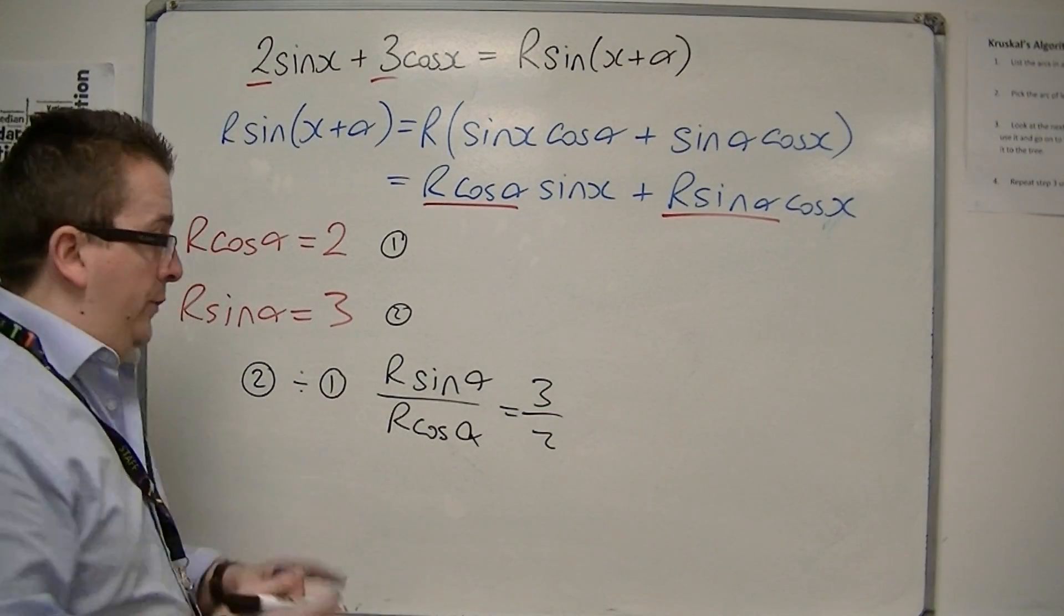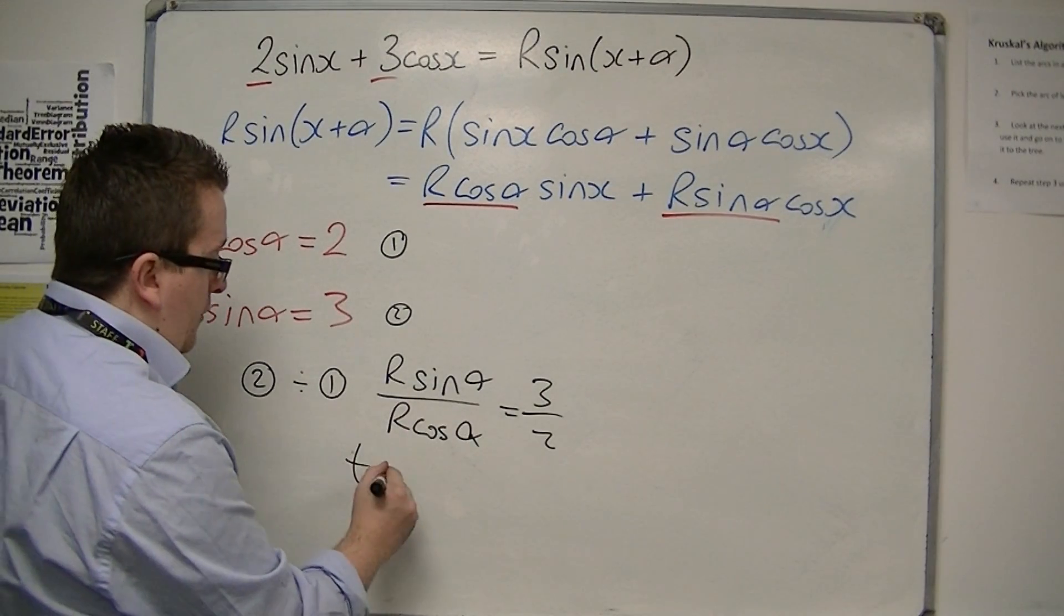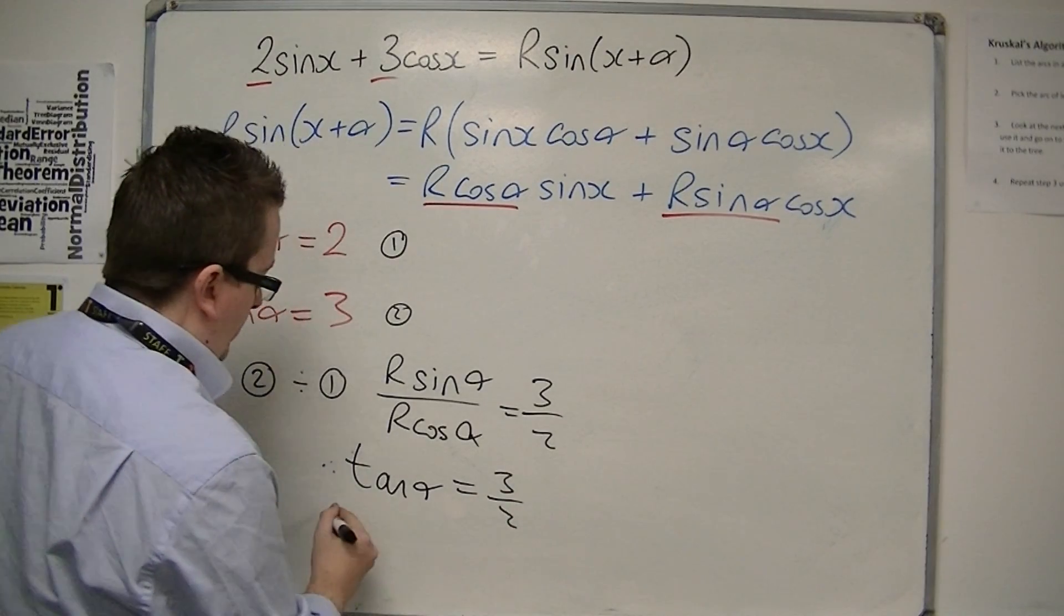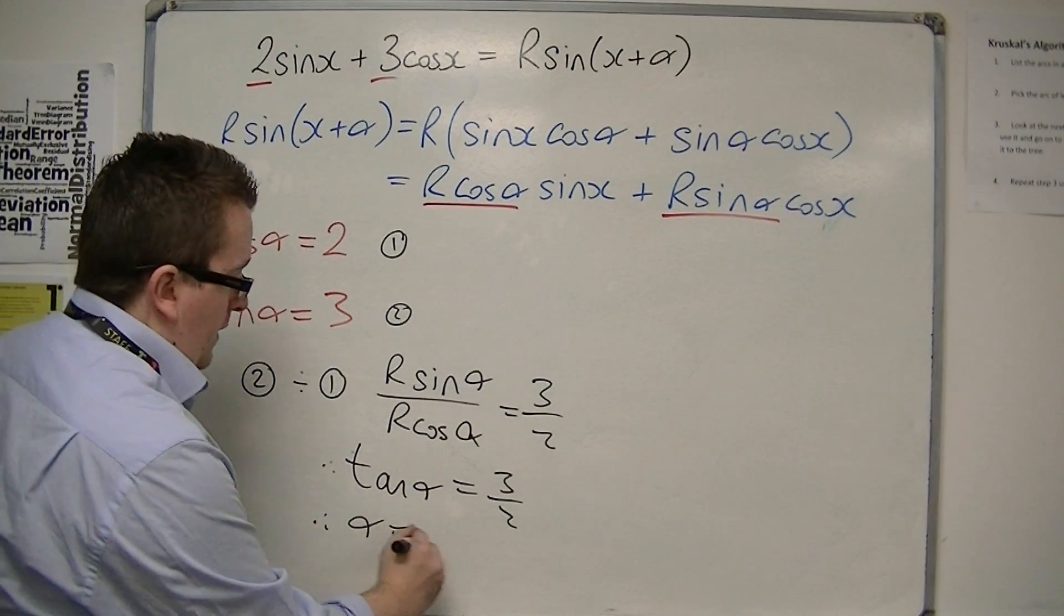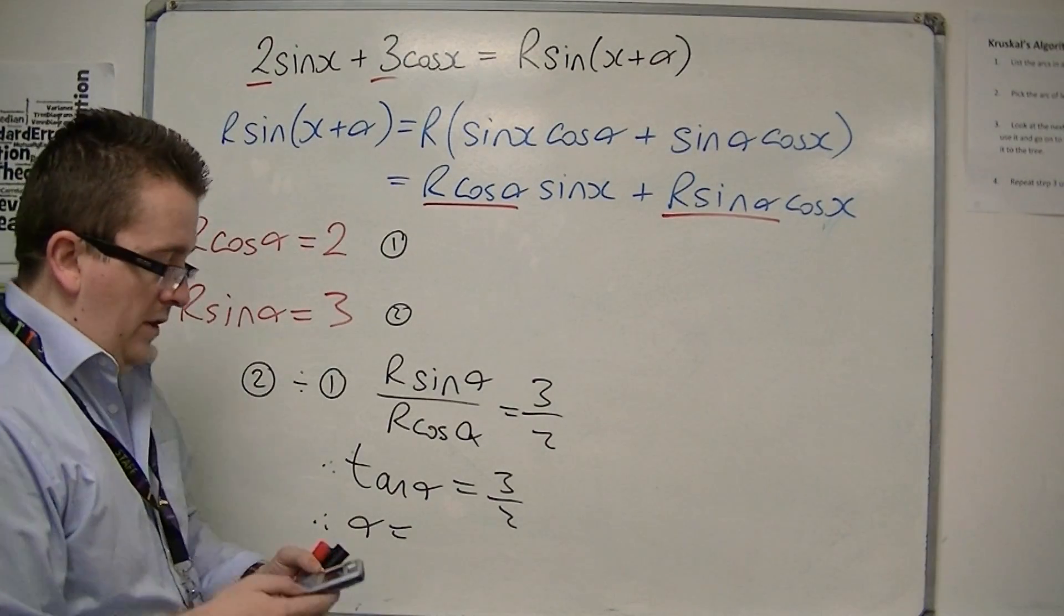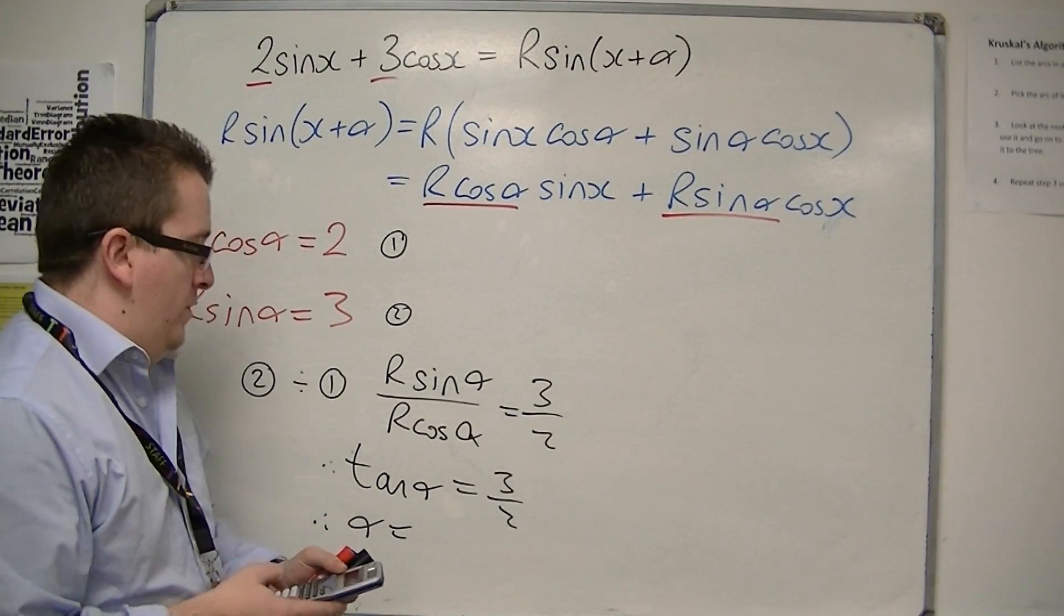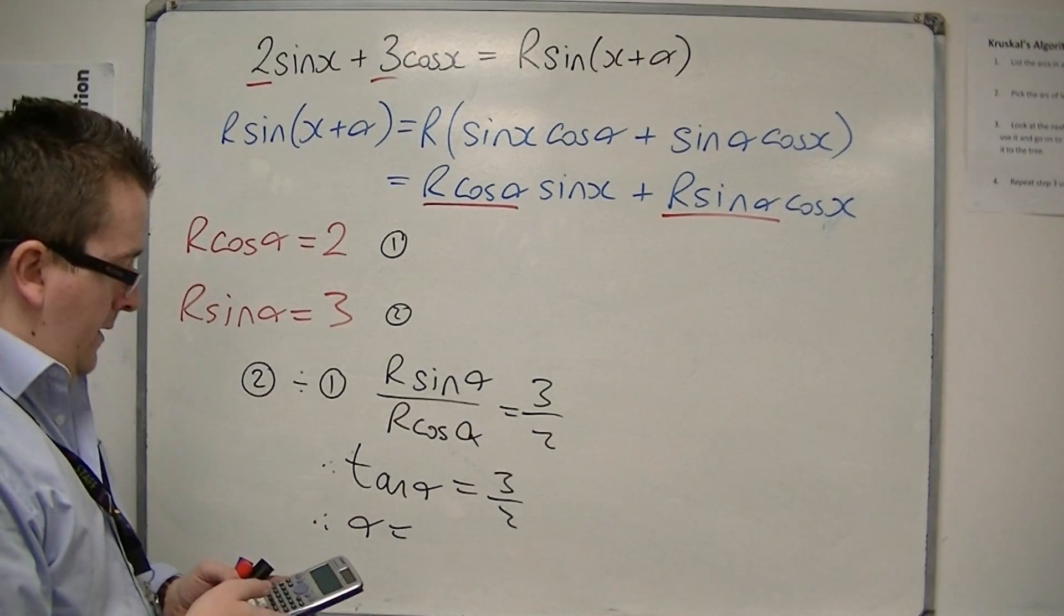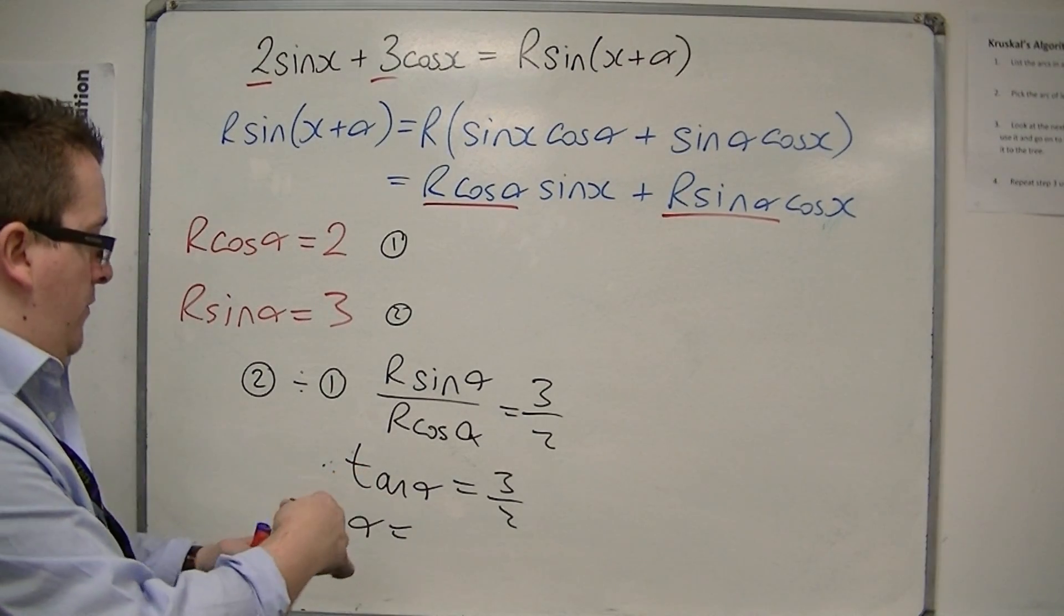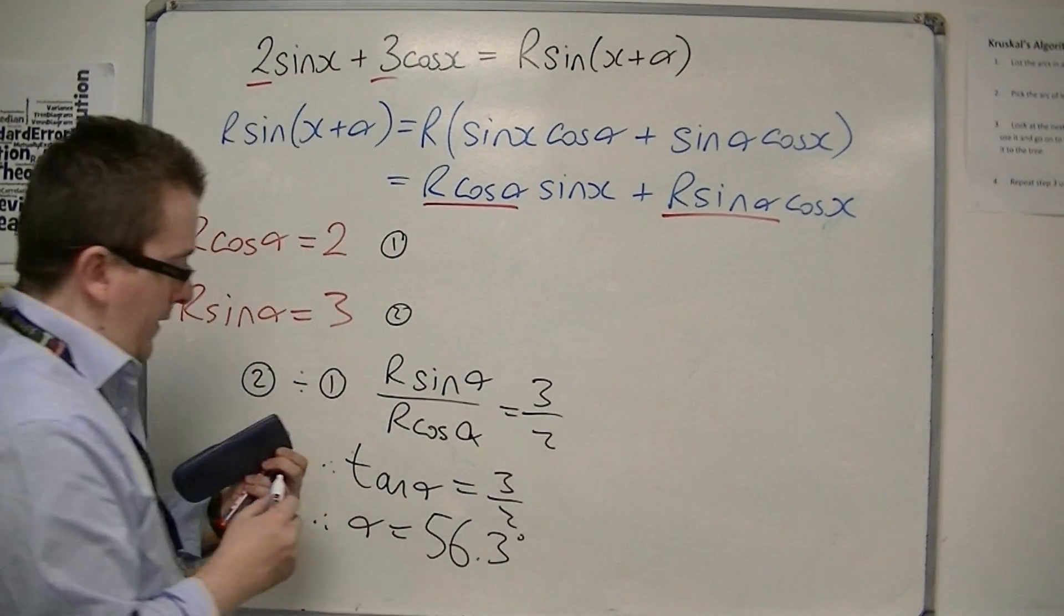Now, the r's cancel, so we have, and sin α over cos α is tan α. So tan α is 3 halves. So α can be found using inverse tan. So I'm going to put this into degrees because traditionally this is in degrees. Inverse tan of 3 halves is 56.3 degrees to 1 decimal place.